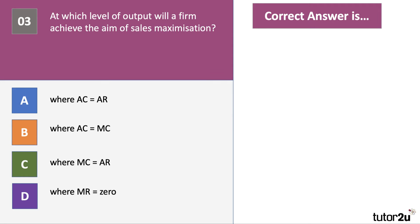Question three is basically a definition question. At which level of output will a firm achieve the aim of sales maximisation? Sales maximisation is achieved at an output level where average cost equals average revenue — price equals cost — the break-even point where a firm is making a normal profit.